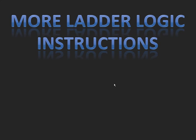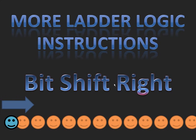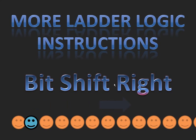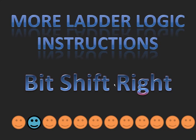Next up under more ladder logic instructions: Bit Shift Right. You can see that the bits are shifting to the right instead of the left. On the face of it, that might be all you think there is to it — that it shifts right instead of left — but as you'll see in the upcoming labs, there's just a little bit more to it than that.